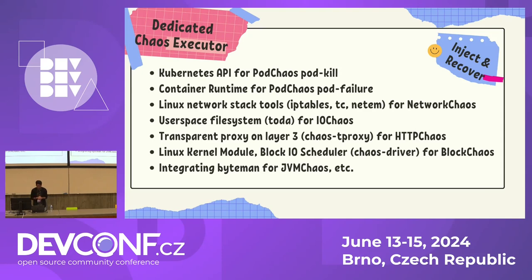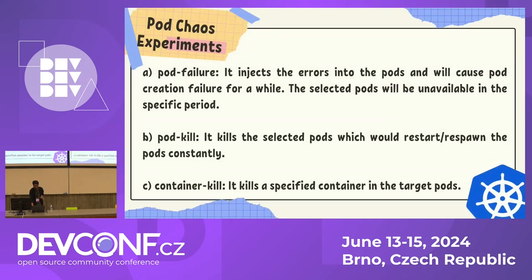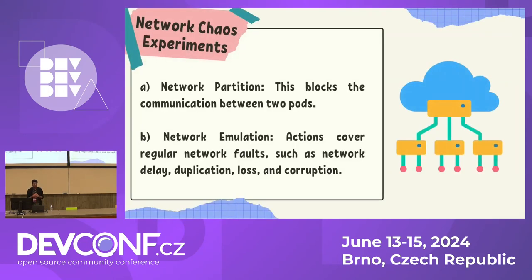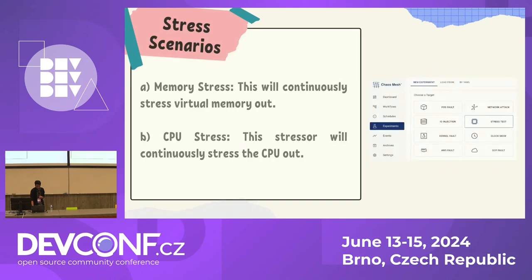In Chaos Mesh you get dedicated chaos executors. We have the Kubernetes API for pod kill and many other types of chaos. For pod experiments, you can start with pod kill, pod failure, or container kill. For network chaos experiments — if you want to block communication between microservices — you can use network chaos. For stress scenarios, if you want to test memory stress or CPU stress, you can also do that using Chaos Mesh.